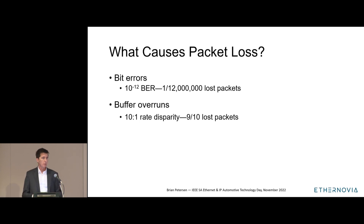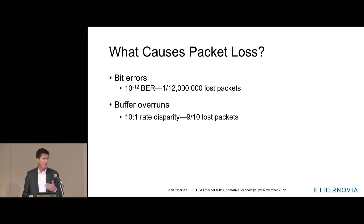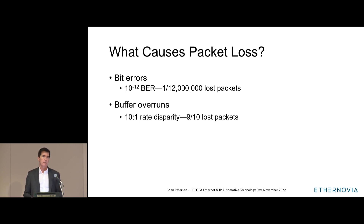With regards to packet loss, there are two primary causes of interest. One is bit errors: assuming a bit error rate of 10⁻¹² and 1000-byte packets, you will on average lose about one out of 12 million packets due to a bit error, and in practice that number is vanishingly close to zero. Buffer overruns, on the other hand, are very easy to cause — receiving nonstop line rate packets on a 10 gigabit link and forwarding all of them to a one gigabit link means you'll be losing nine out of ten packets in very short order. Buffer overruns are what we need to address.